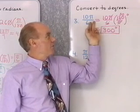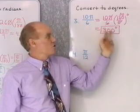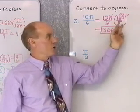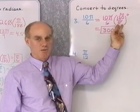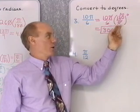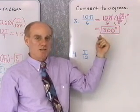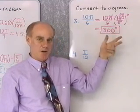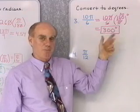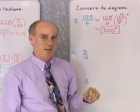To convert from radians to degrees, multiply by 180 over π. To convert from degrees to radians, multiply by the reciprocal, π over 180.